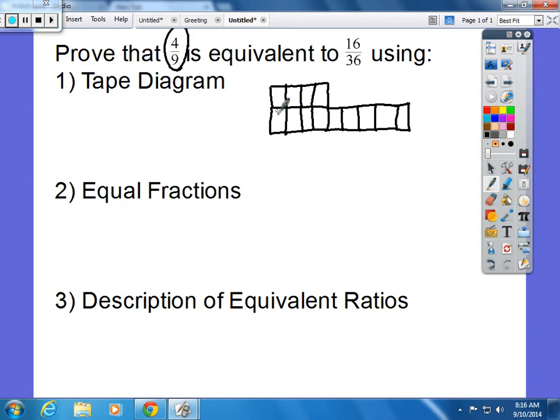Okay. I have to use this tape diagram to prove that 4 ninths is equal to 16 over 36. So I'm going to set this equal to 16, and I'm going to equal this to 36. If these two ratios are equivalent, the same number will go in each one of these boxes.